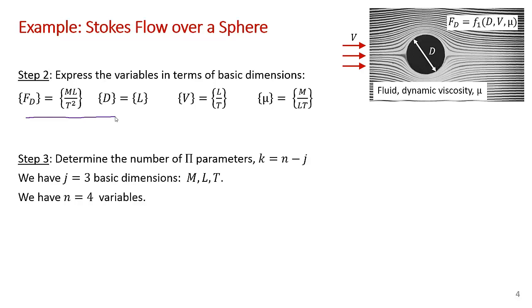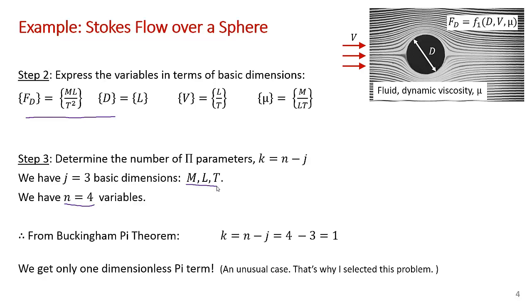Step three, we want to determine the number of pi parameters: k = n - j. k is the number of parameters, n is the number of variables (four in this case), and we have three basic dimensions: mass, length, and time. So from Buckingham Pi theorem, it says we have 4 - 3 = 1. We only expect one pi term. And indeed, this is a very unusual case. That's why I selected this problem. When you have one pi term, there's a special way that you handle the last step.